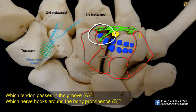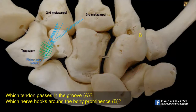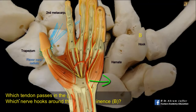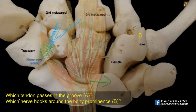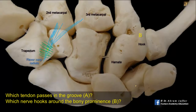Which nerve hooks around the bony prominence B? The bony prominence is the hook of the hamate. The ulnar nerve enters the palm on the ulnar side of the surface of the flexor retinaculum, superficial to the flexor retinaculum. At this position, the ulnar nerve is located lateral to the pisiform bone.